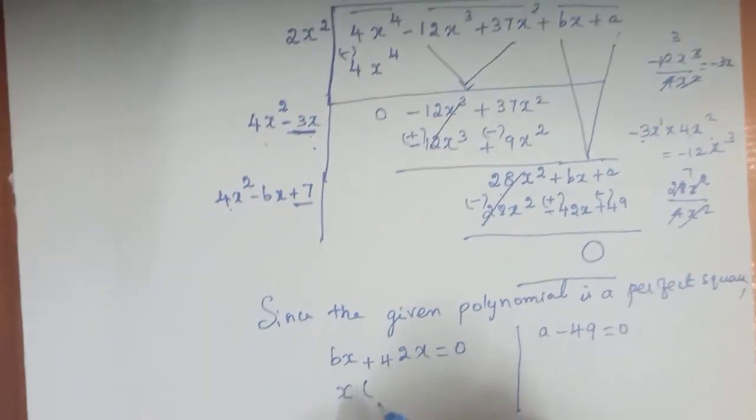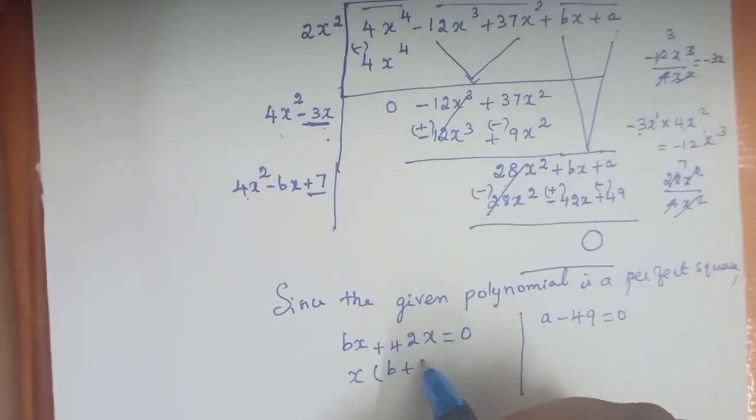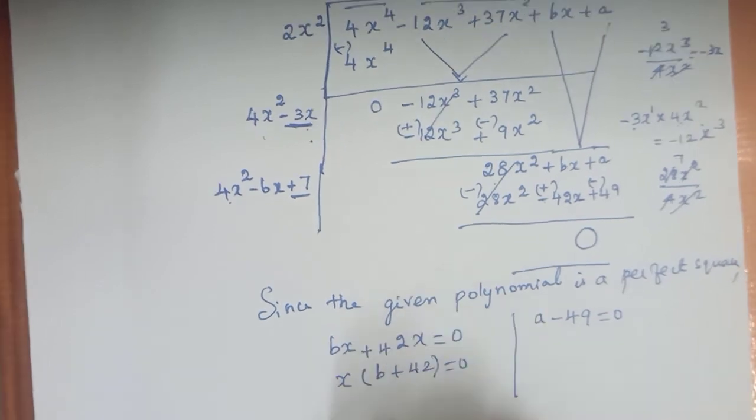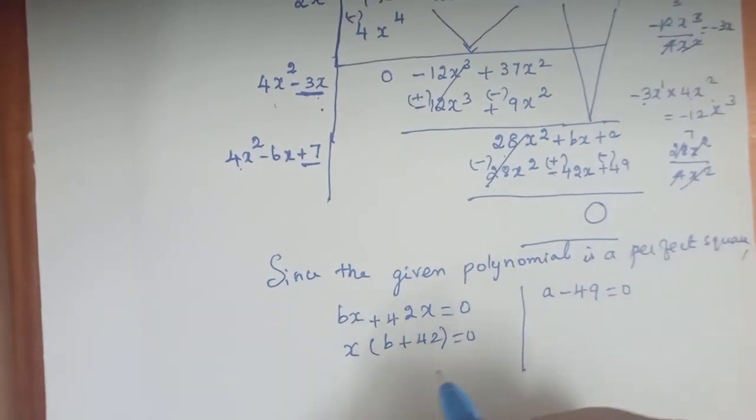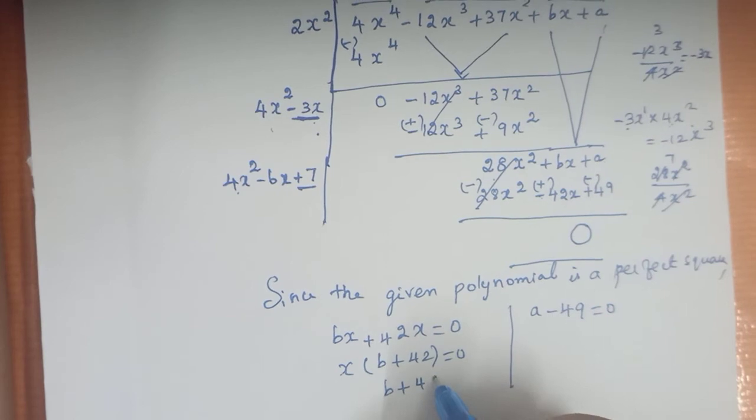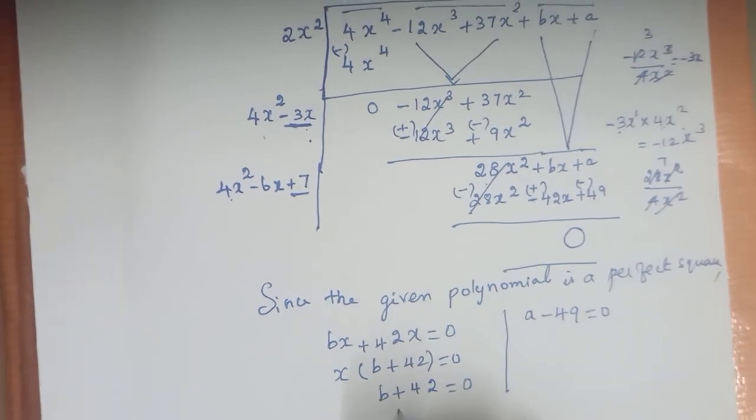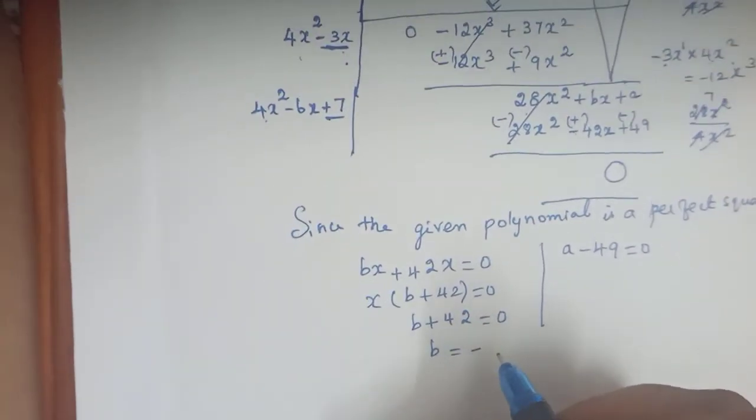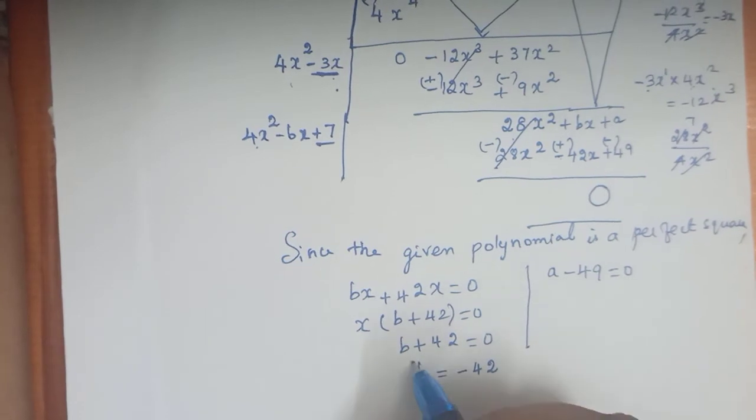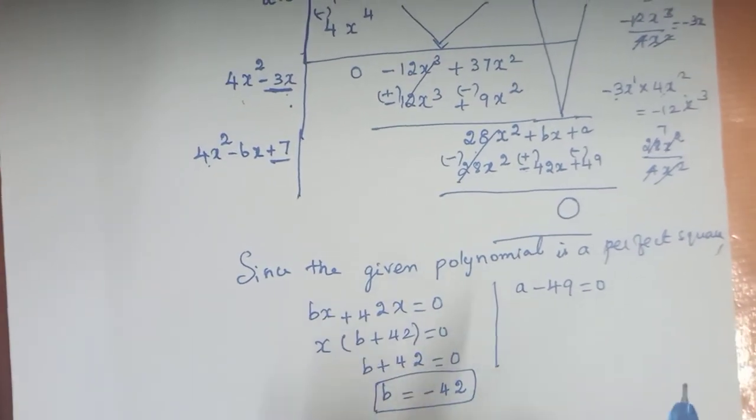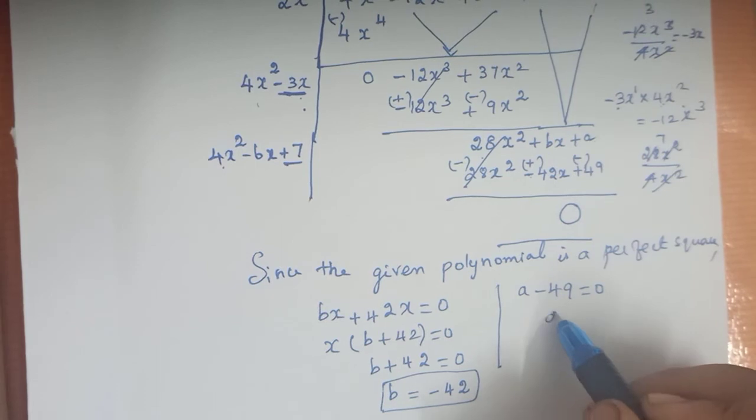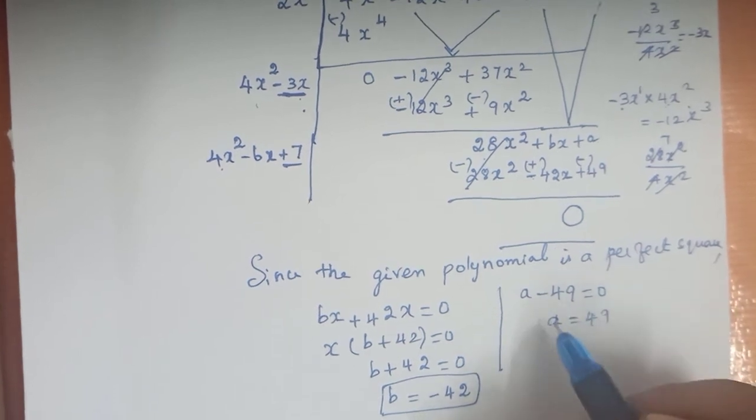Take x common: b plus 42 equals 0. x divided by x is 0. So b plus 42 equals 0, which means b equals minus 42. And a minus 49 equals 0, so a equals 49.